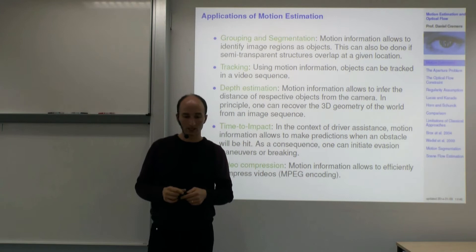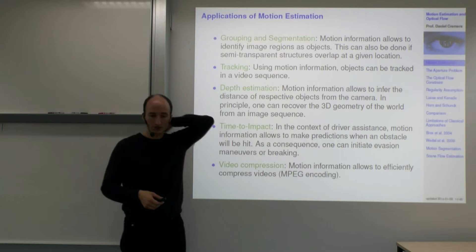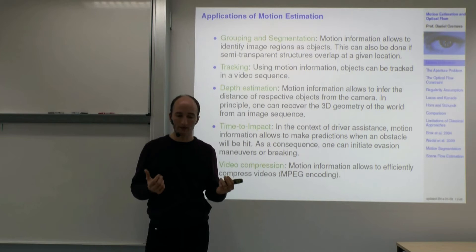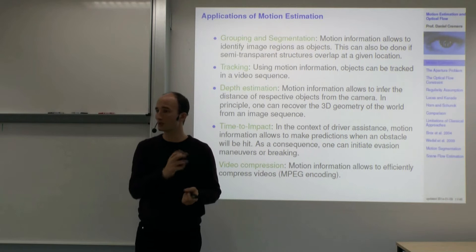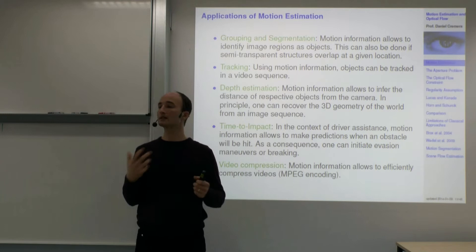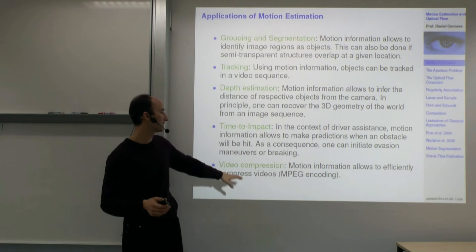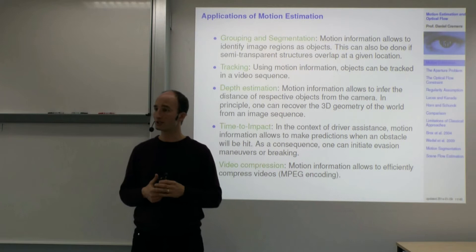Motion can also be used in video compression. Typically many scenes have a static background and a moving object, so you can store the whole video by figuring out what the object is and what its motion is, then resynthesize the video from just knowing the objects and their motion. The MPEG standard ideally assumes that such motion segmentation is possible for compression.